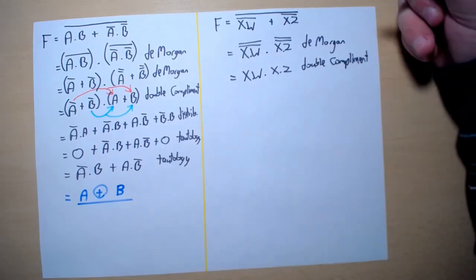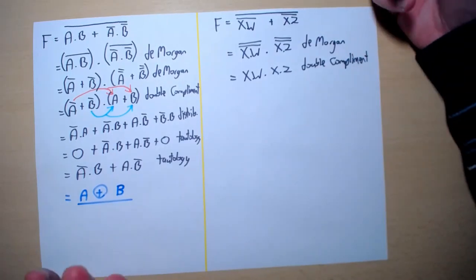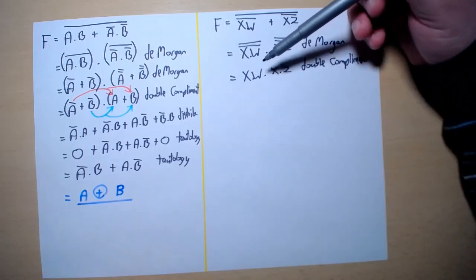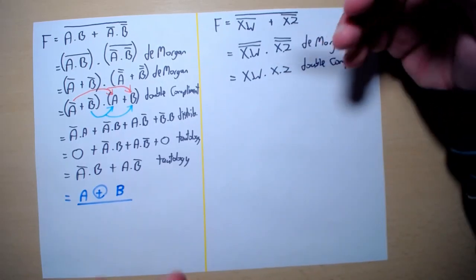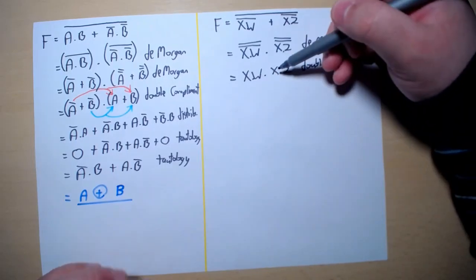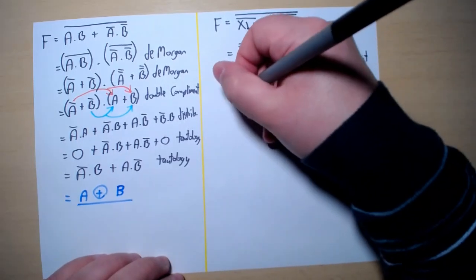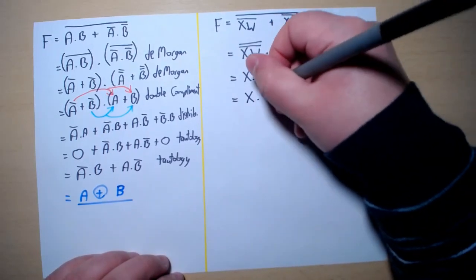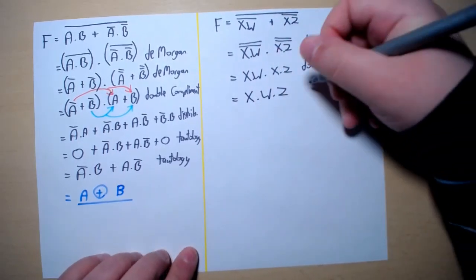And then using tautology we know that when we have two inputs, two letters in the same AND gate, we can get rid of one of them. So where we have X and X, we can get rid of one of them and write it down as X and W and Z using tautology.